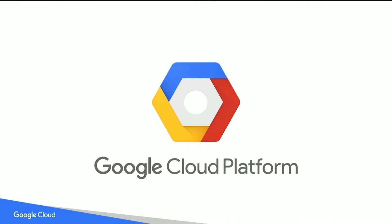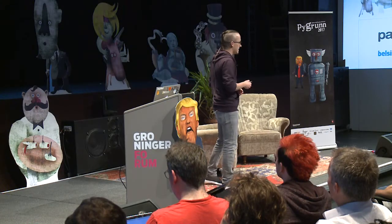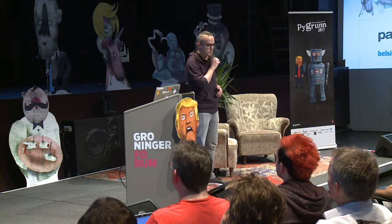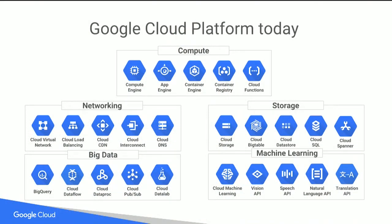Google Cloud Platform is Google's offering of all the products and services we've been building internally for our own purposes, made available for others to leverage the same technology. It spans compute infrastructure — virtual machines, platform-as-a-service, containers — big data, storage, and machine learning. Today we'll focus specifically on some of the big data parts and a lot of the machine learning: the products and APIs that are very easy to start consuming to make your apps smarter.